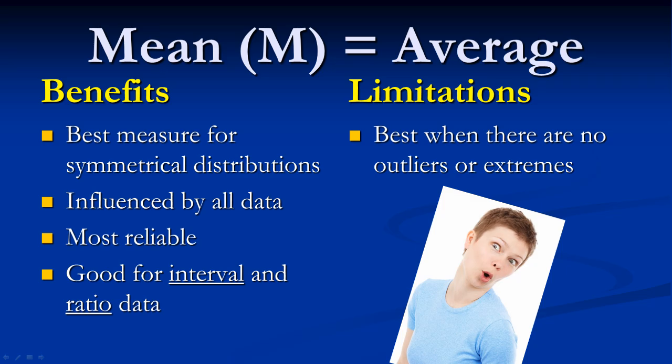The mean is influenced by all data in a study. For this reason, it works best for symmetrical distributions of data where there are no outliers or extremes. However, the larger the data set, the smaller the influence of any extreme scores will be.